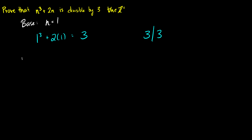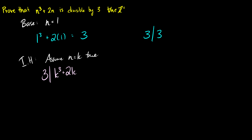Next is going to be the induction step. So our hypothesis is we're going to assume n equals k is true. So what does this mean? This means that 3 is going to divide k cubed plus 2k. So by definition, this means that 3 times m is going to equal k cubed plus 2k for some m in the set of integers.